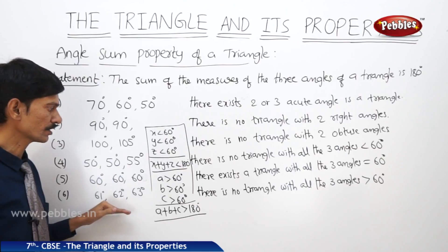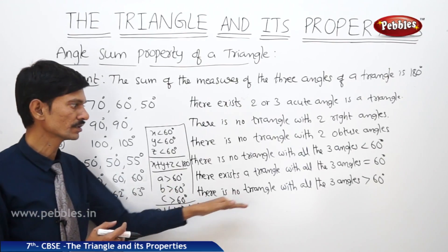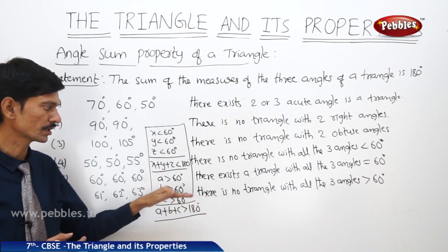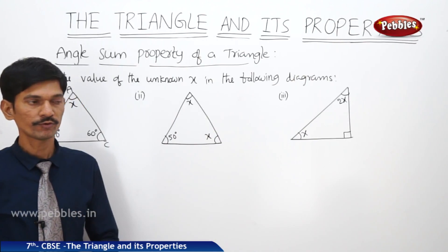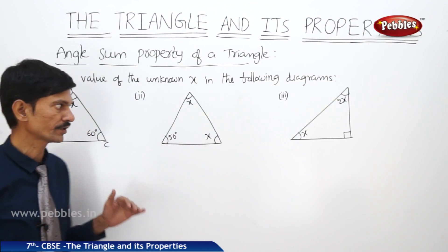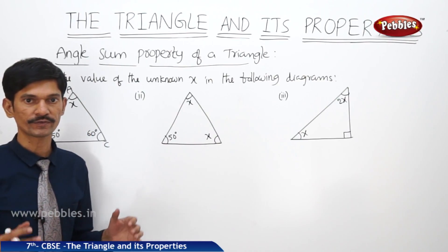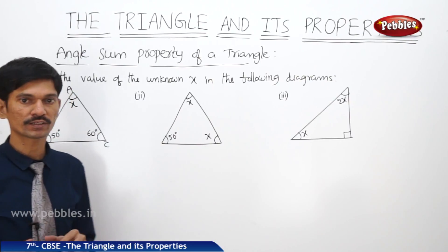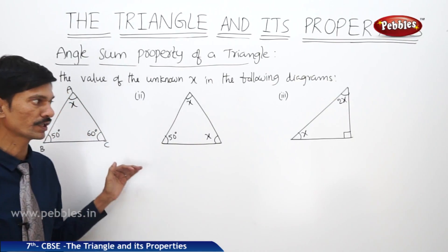So this is the sixth situation of the triangle. When you take all three angles more than 60 degrees, there is no triangle — the triangle does not exist. Now, according to the angle sum property of a triangle, the sum of the measures of the three angles of a triangle is 180 degrees.